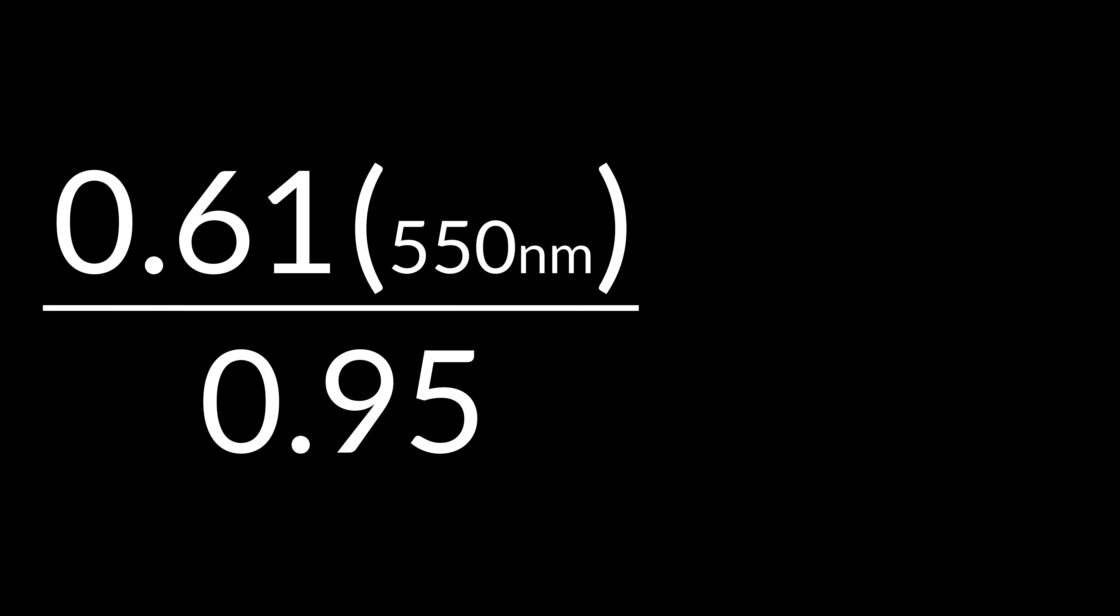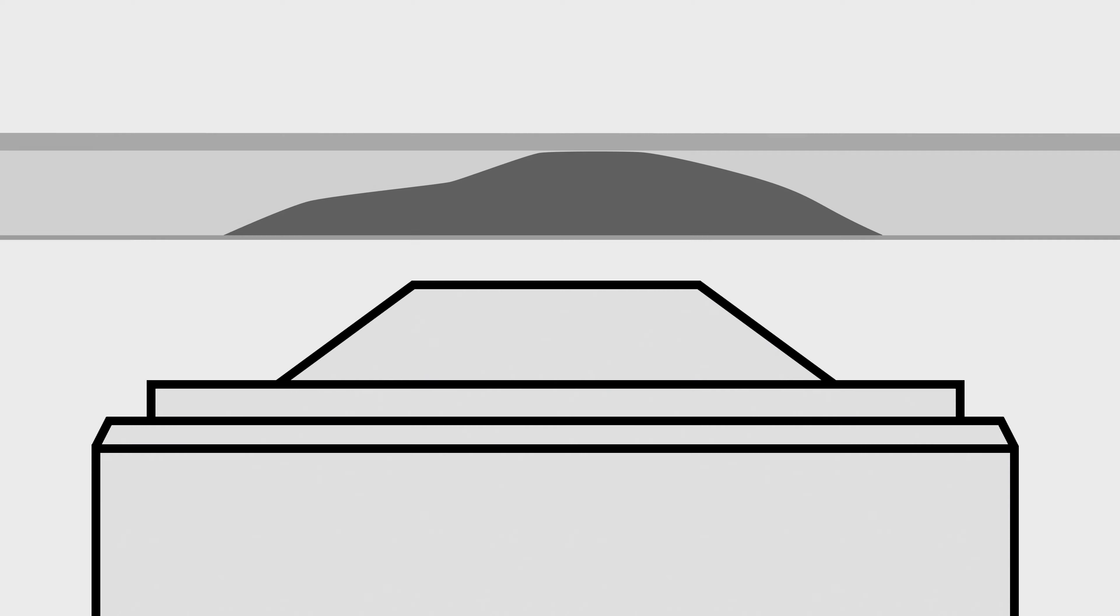According to the Rayleigh criterion, the best resolution we can achieve with this NA would be approximately 350 nanometers. If our experiments require a higher resolution than this, we'll need to use a lens that is designed to use a higher refractive index medium between the coverslip and the objective.